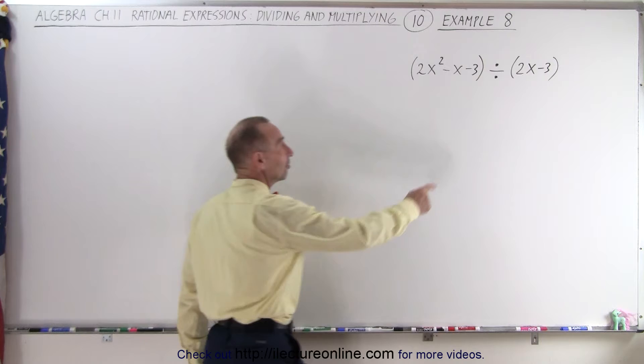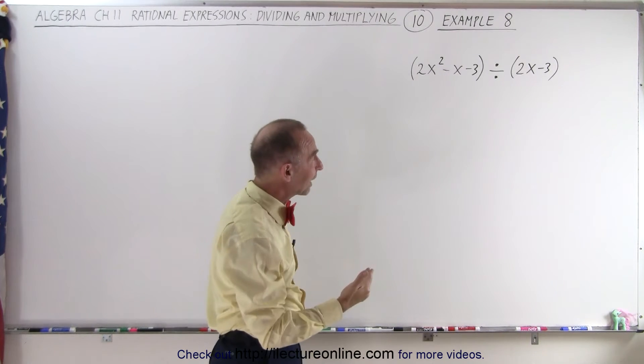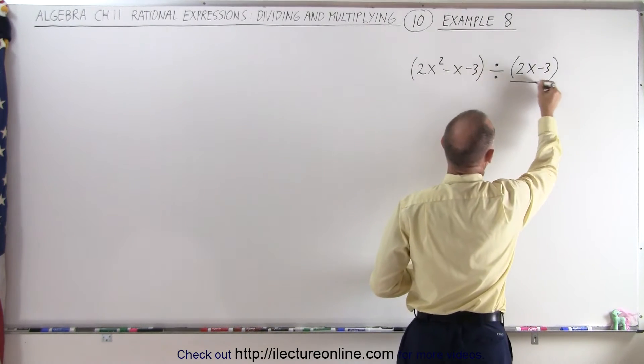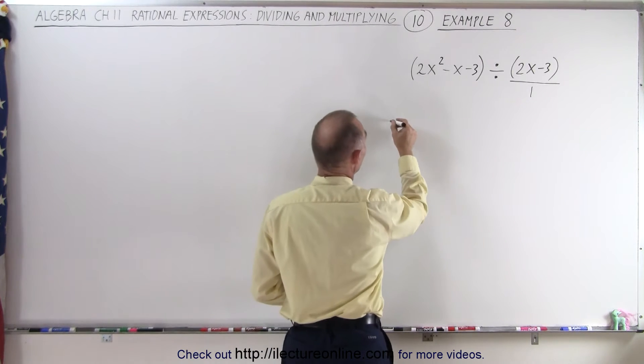Notice we do have a division symbol and we're going to change it into a multiplication symbol. Remember that the quantity 2x minus 3 is really the same thing as 2x minus 3 divided by 1.